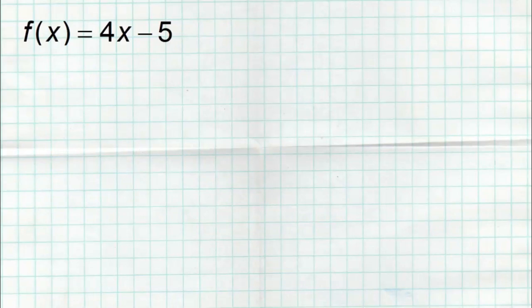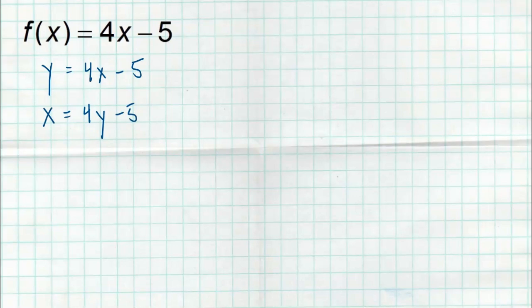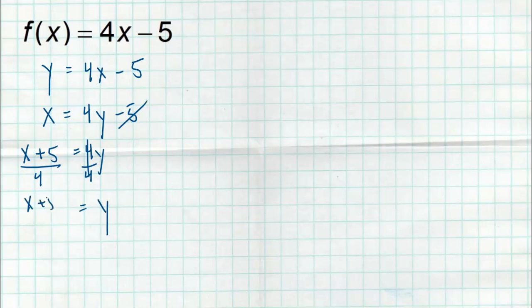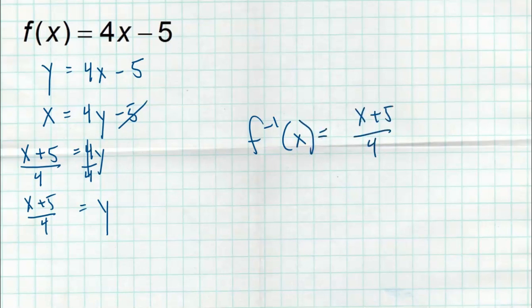Here's our first example of an analytical representation: f(x) = 4x − 5. Step one is changing the f(x) to a y. Step two is switching all of our x's and y's so that y becomes an x and the x becomes a y. Then we solve for y: we add 5 to get x + 5 = 4y, then divide everything by 4. The fours reduce away and we get y = (x + 5) / 4. For the final step, we identify this as the inverse function: f⁻¹(x) = (x + 5) / 4, or equivalently ¼x + 5/4. Pretty easy, not overly complicated.